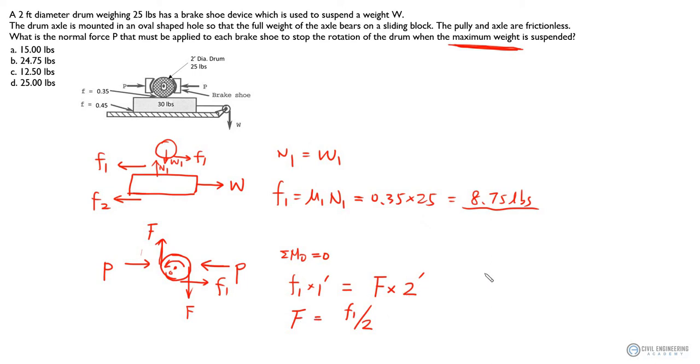So F, and then F equals to mu1 times normal force P, which is 0.35 times P. So we can put it back to this equation, so F1 is 8.75 divided by 2, so that's 12.5 pounds.